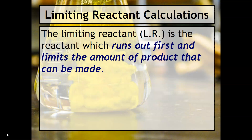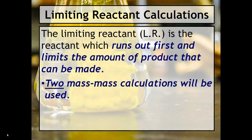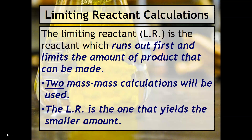The limiting reactant, often abbreviated as L.R., is the reactant which runs out first and limits the amount of product that can be made. In this class, we are going to use two mass-mass calculations. The limiting reactant is always going to be the one that yields the smaller amount from those mass-mass calculations.